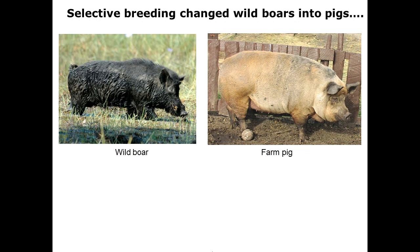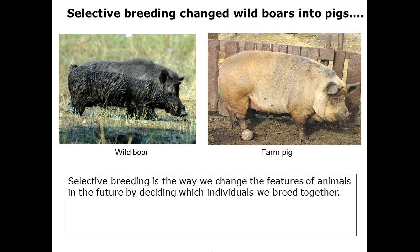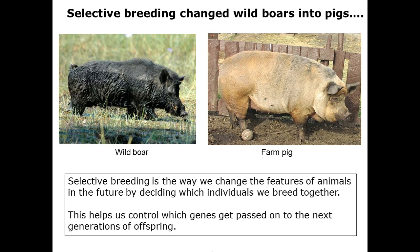Another example of selective breeding is how farmers changed the wild boar into the farm pig. Selective breeding is the way we change the features of animals by deciding which individuals will breed together. We selected characteristics of the wild boar and kept doing selective breeding to keep those characteristics, resulting in the farm pig. This helps us control which genes get passed on to the next generation — when you do selective breeding, you select a specific characteristic you want passed on.